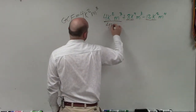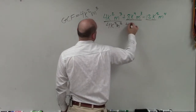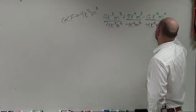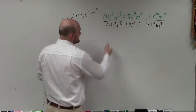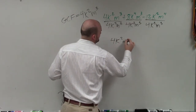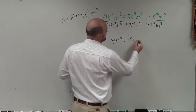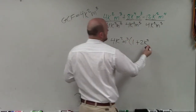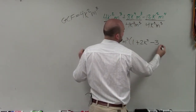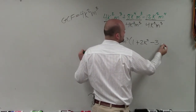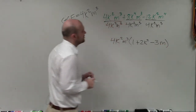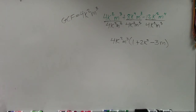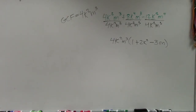So again, we're just going to use our rules of exponents. Since I'm dividing it out, I'm going to rewrite it as a product. And therefore, the quotient is going to leave me with 1 plus 2k squared. This becomes m to the 0, which is just m. And then minus 3k — that becomes k to the 0, which is just 1 times m to the first power. So your final answer would be 4k squared m cubed times the quantity 1 plus 2k squared minus 3m.